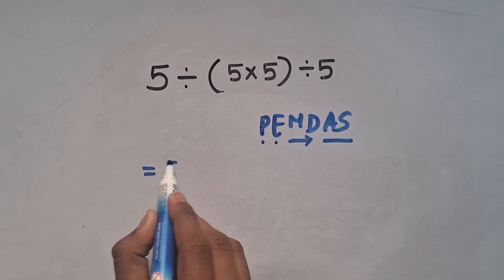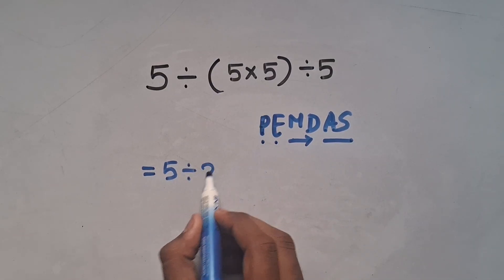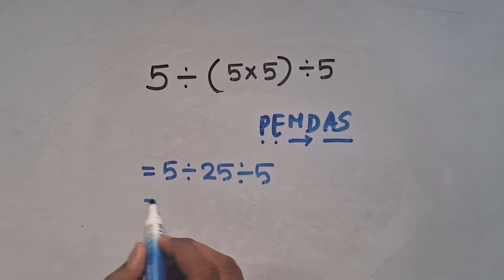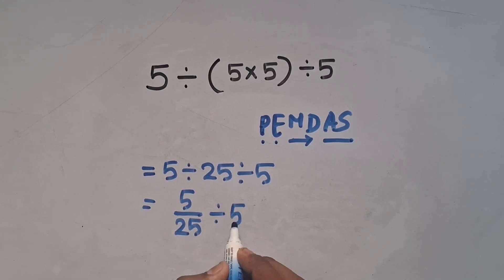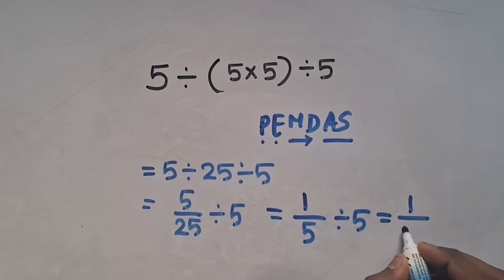So 5 divided by (5 times 5) divided by 5 equals 5 divided by 25 divided by 5. This becomes 5/25 divided by 5. 5 and 25 cancel, so it becomes 1/5 divided by 5, which equals 1/5 times 1/5.